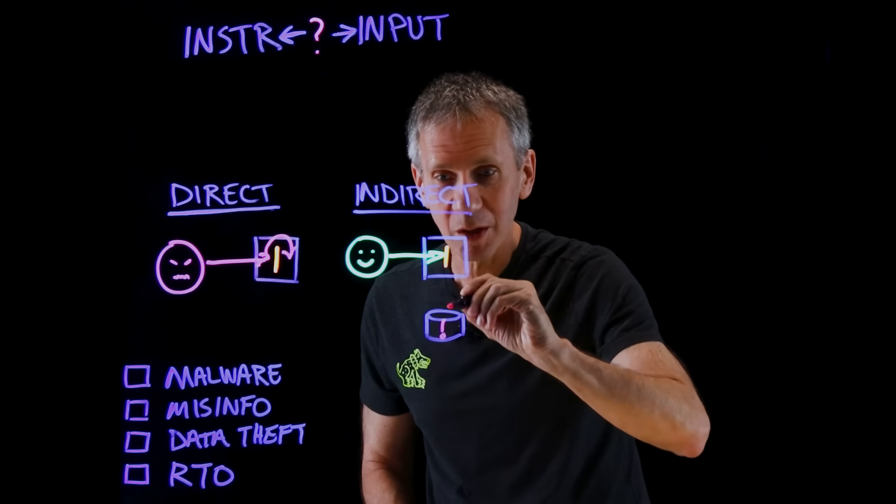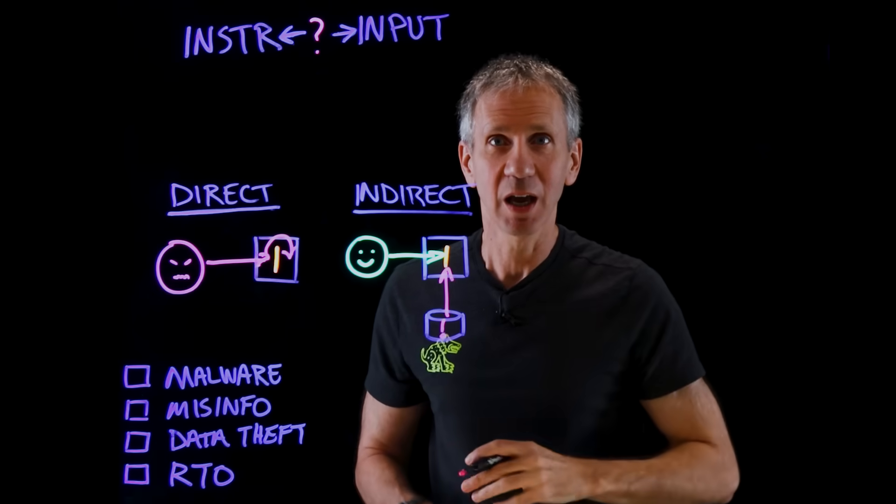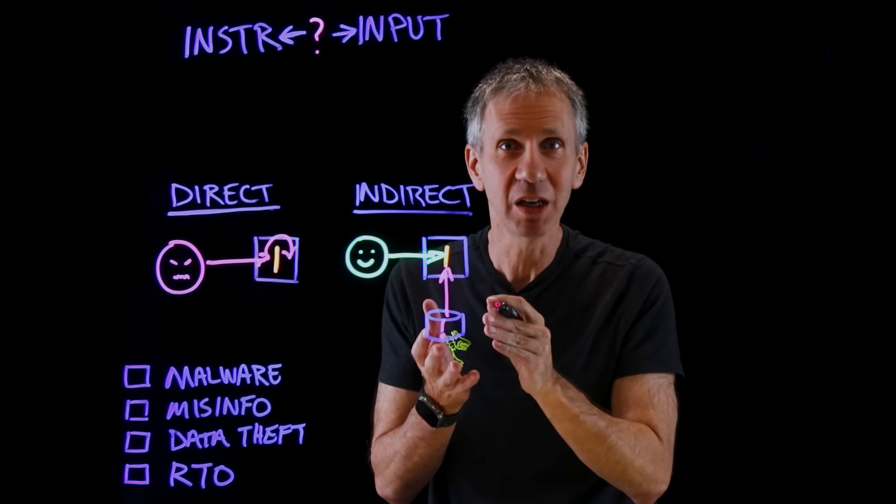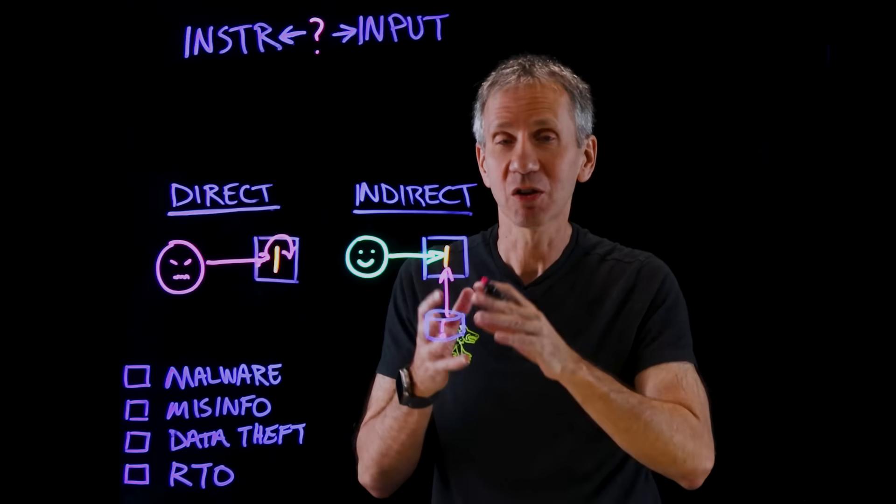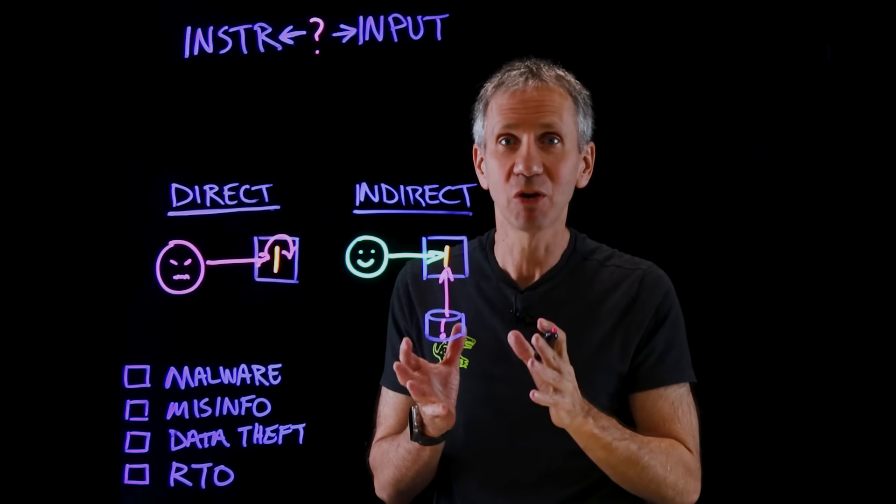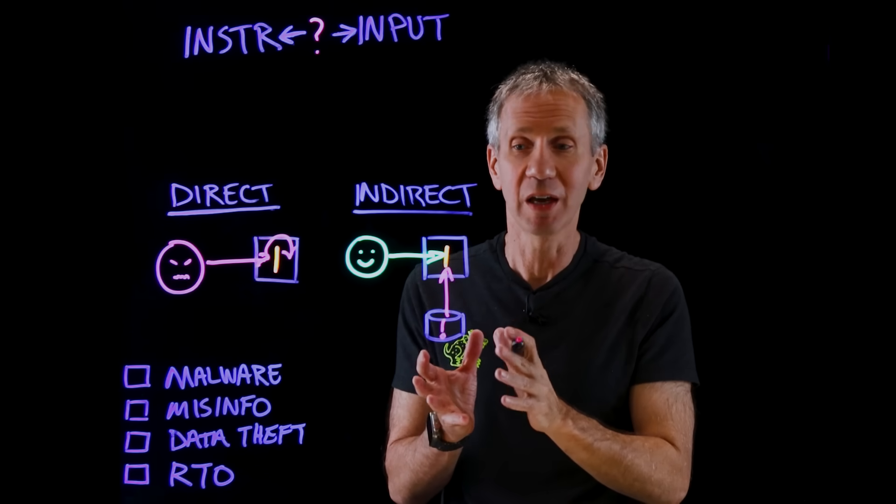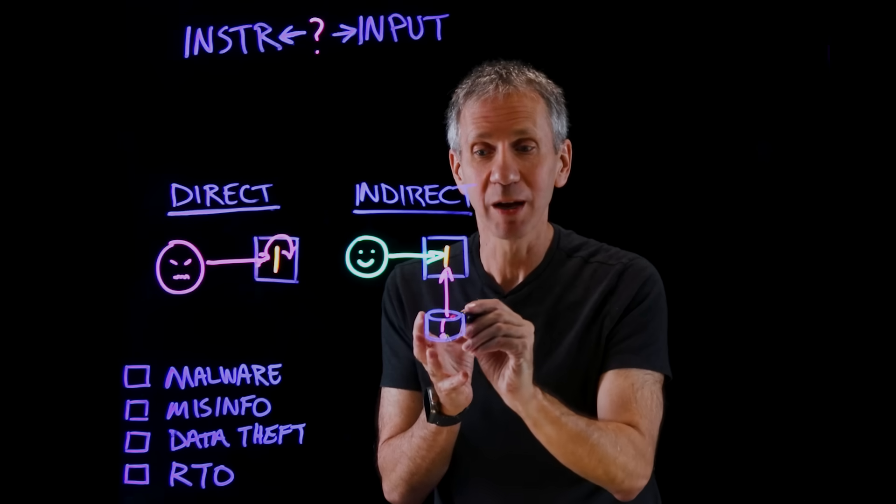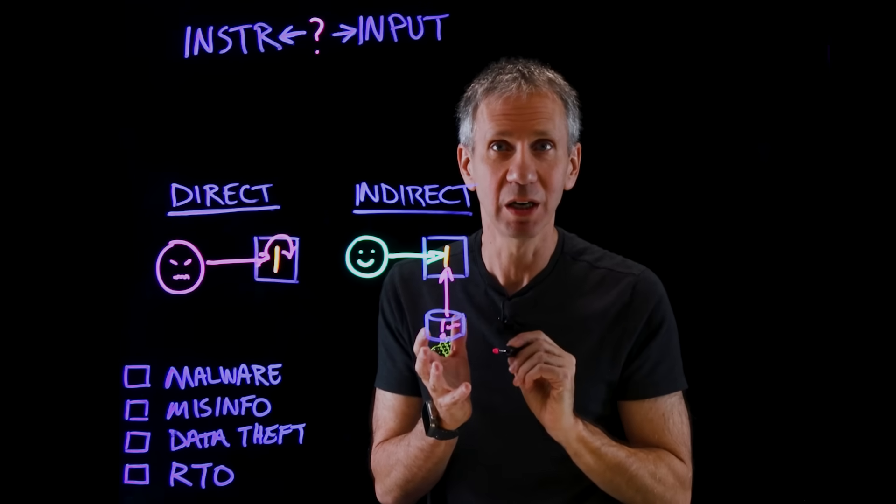But some of this bad data has come in and been integrated into the system. And the system is going to read this bad information. This could be PDFs. It could be web pages. It could be audio files. It could be video files. It could be a lot of different kinds of things.